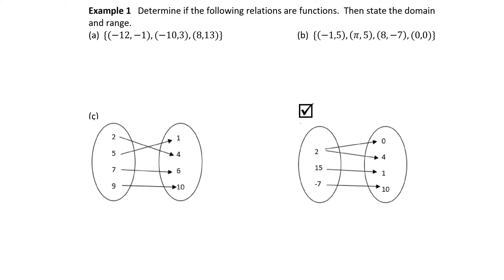The relation in example A is defined as a set of ordered pairs. In each ordered pair, the first element is a value of the independent variable x and the second element is a value of the dependent variable y. We will rearrange the information and split this into a distinct set called the domain and a distinct set called the range. The domain is the list of all x values — the set of all first components of each ordered pair. So the domain consists of values negative 12, negative 10, and 8.